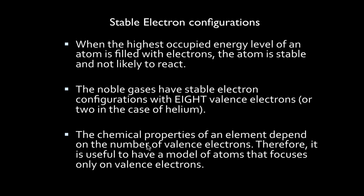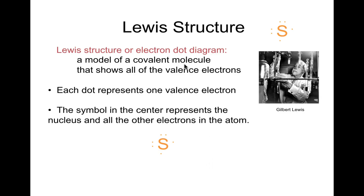Elements become stable by bonding with other elements. Chemical properties of an element depend on the number of valence electrons. Therefore, it is useful to have a model of an atom that focuses only on valence electrons. The model we're going to use is sometimes called a Lewis structure or an electron dot diagram, created by Gilbert Lewis. It's a model that shows all of the valence electrons, where each dot around the symbol represents one valence electron.